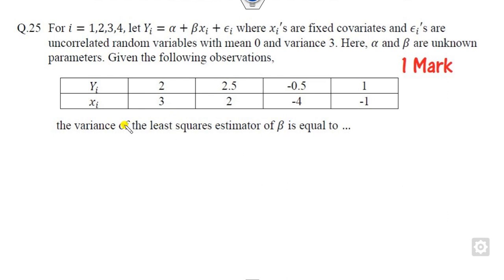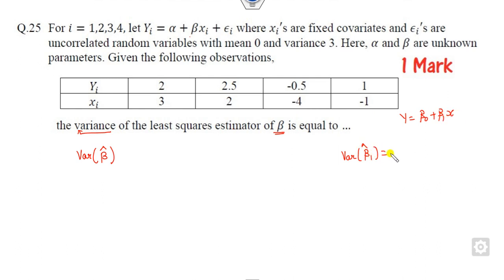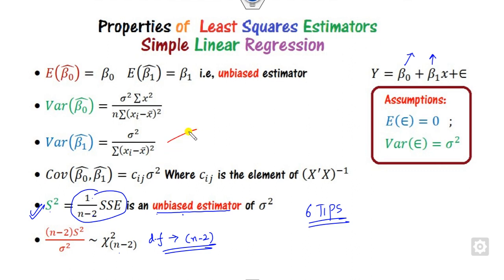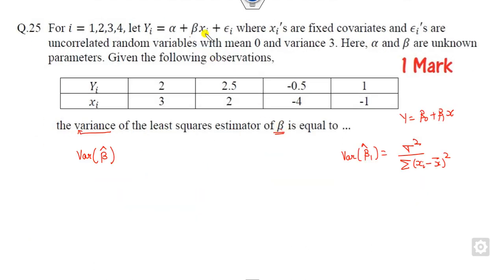For the last question, you need to find the variance of the estimator of beta. Going back to the six tips, for an equation of this form the variance of the beta-1 estimator — the coefficient of x — is sigma square divided by summation of (x_i minus x-bar) squared. You need to find x-bar, which is the summation of x_i divided by n.